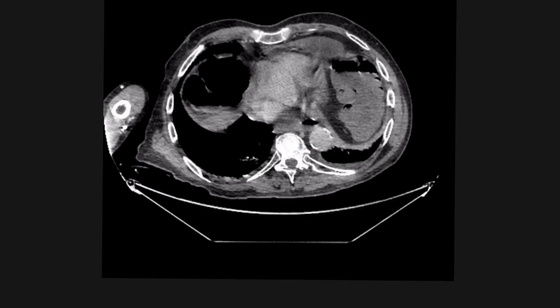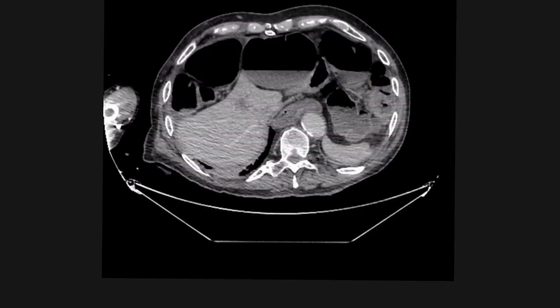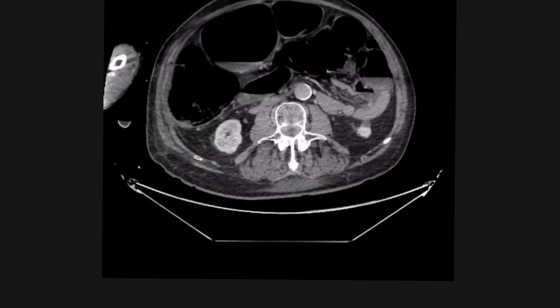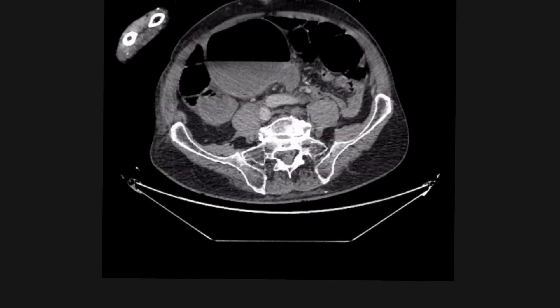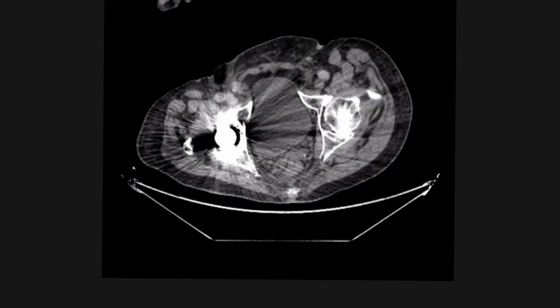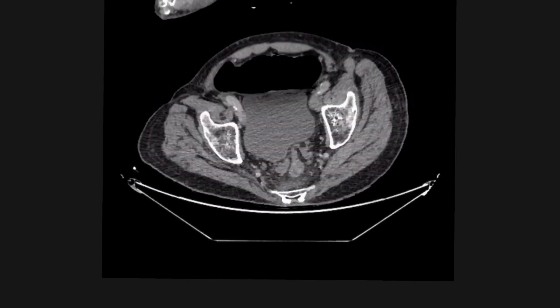However, sometimes you can't tell on x-ray, and you need to do a CT. So if we look at these axial slices on the CT abdomen, we can see all this dilated large bowel. And again, we're looking for a twist. And there is the twist, which is in the sigmoid colon.